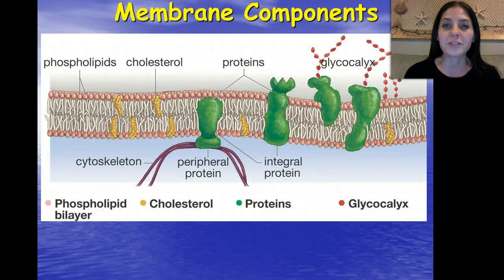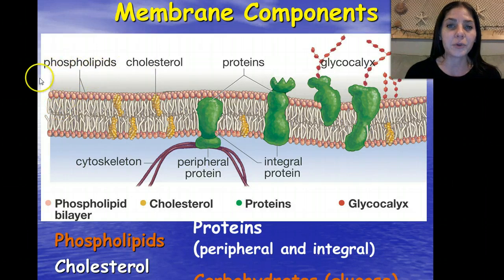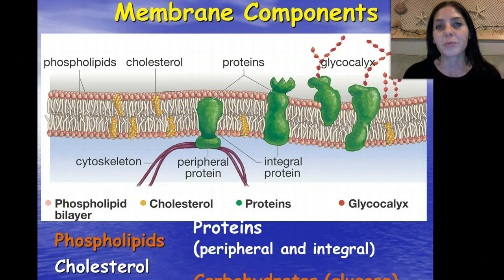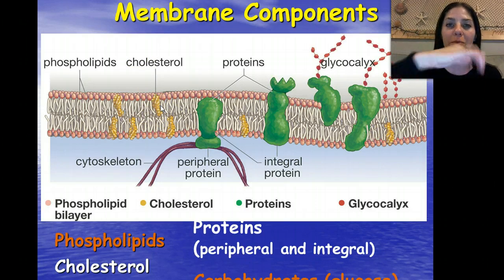Before we can discuss transport, we need to talk about what the membrane is composed of. The membrane has phospholipids, proteins, and carbohydrates. We have the phospholipid bilayer — one of our main biomolecules, lipids, which are fats. The phospholipid bilayer of the plasma membrane is made out of two layers of fats. We also have cholesterol, which helps give the membrane its fluidity.